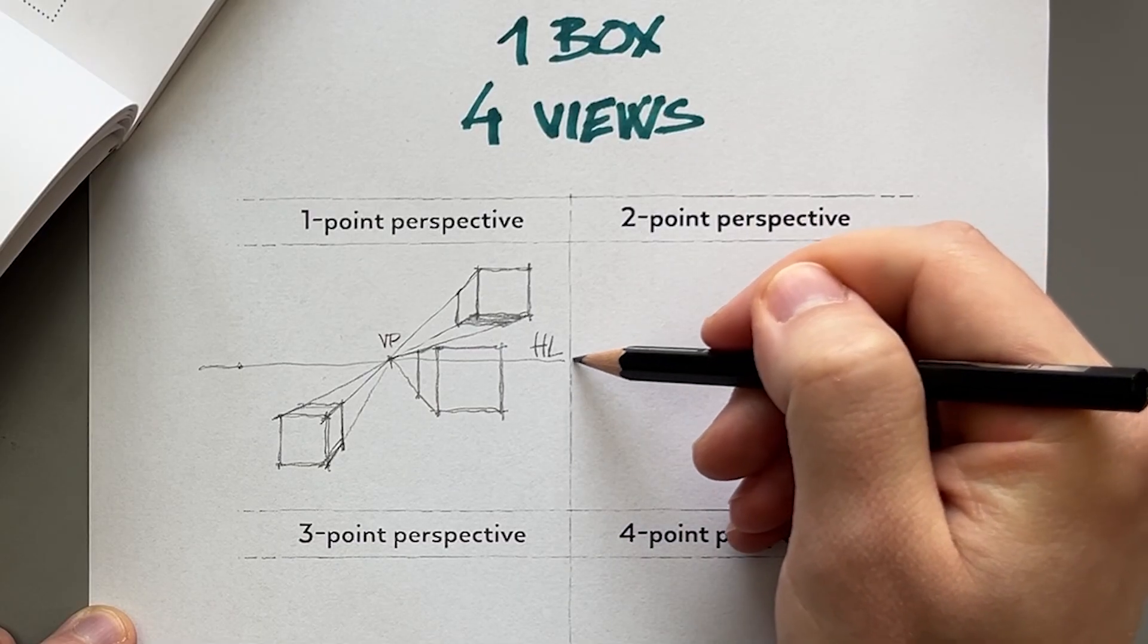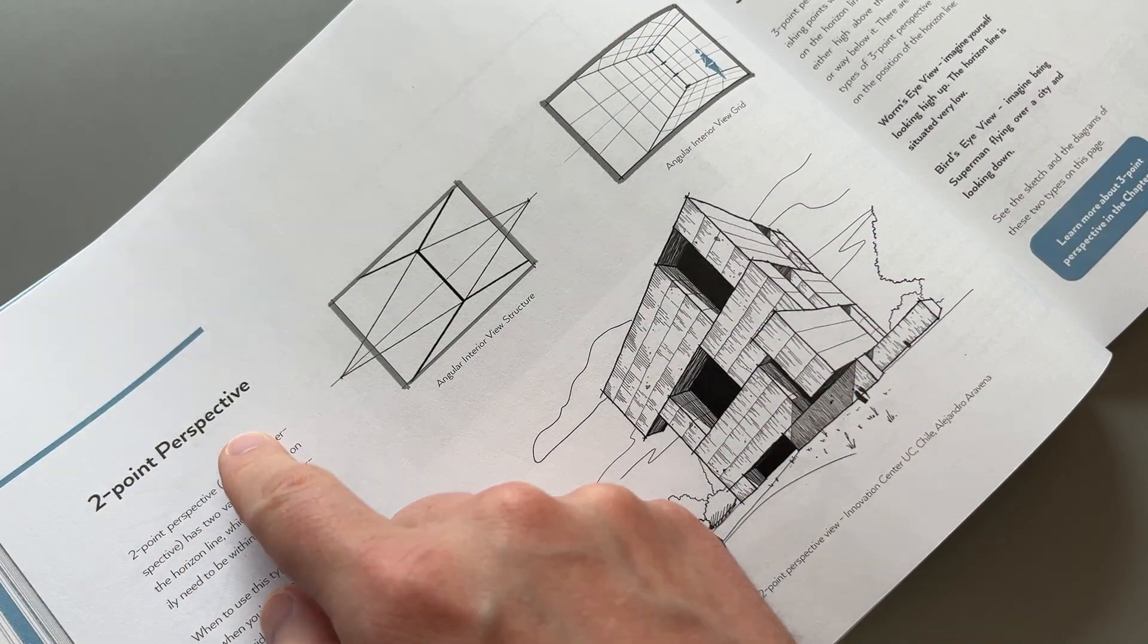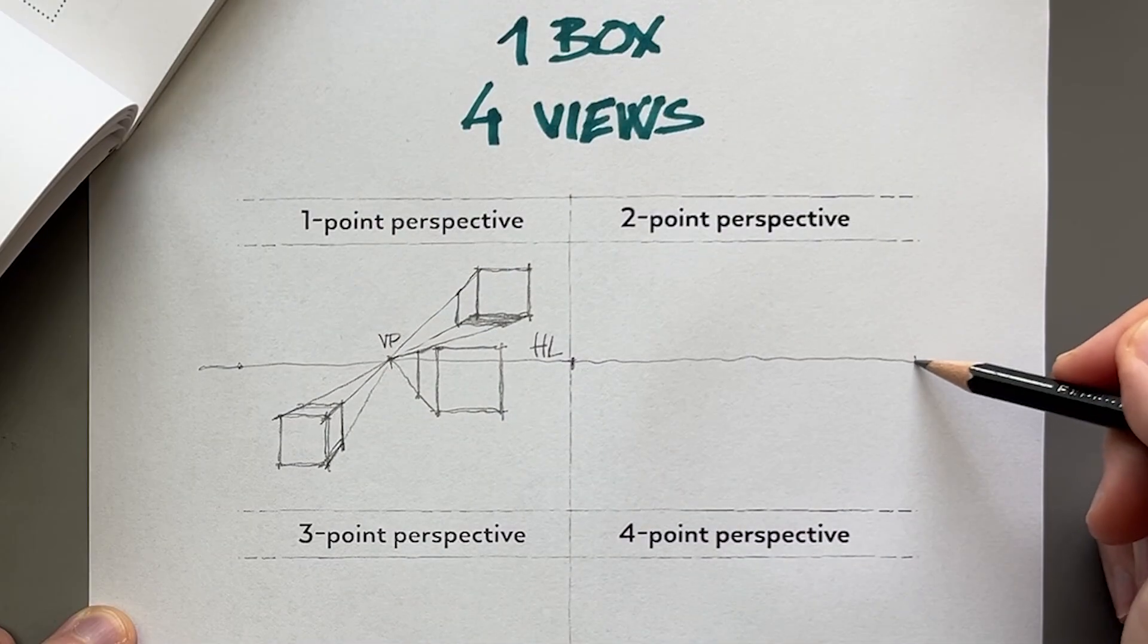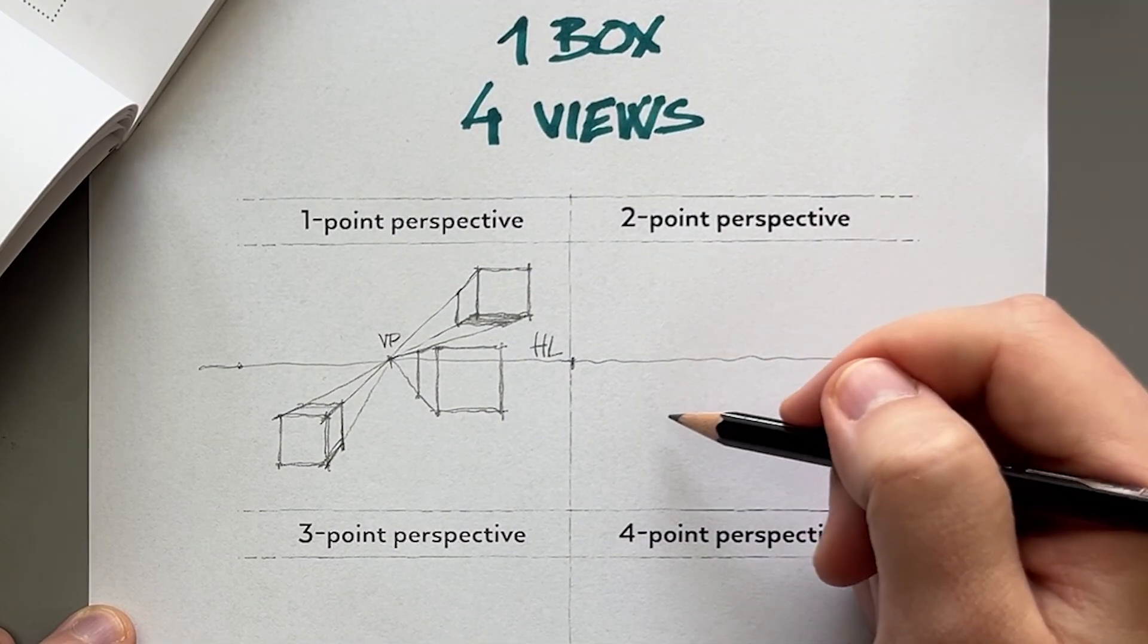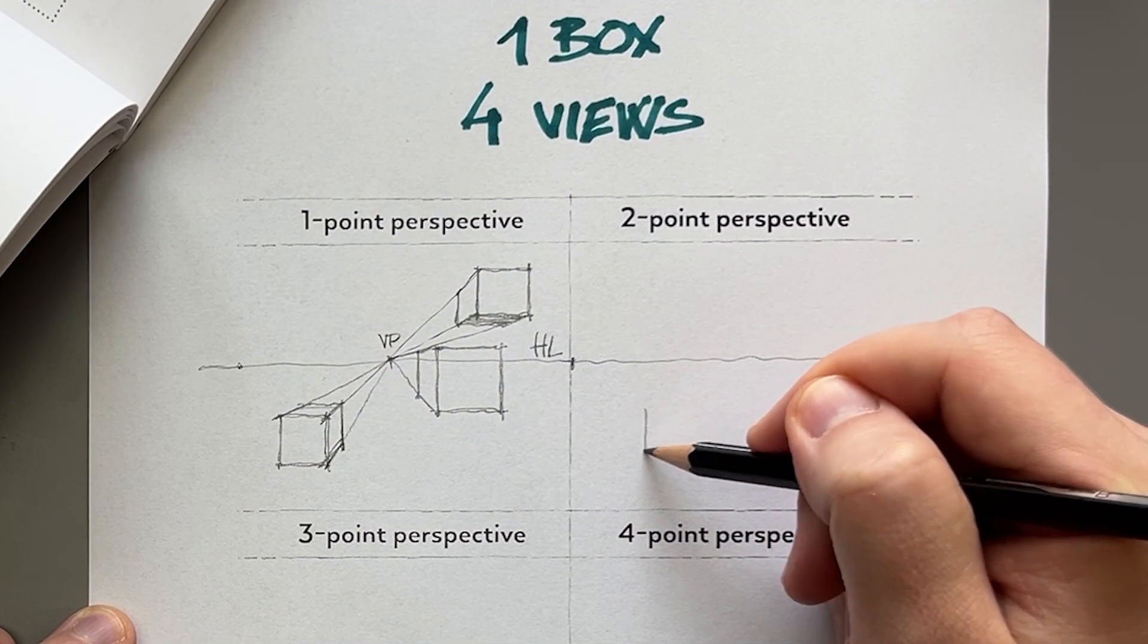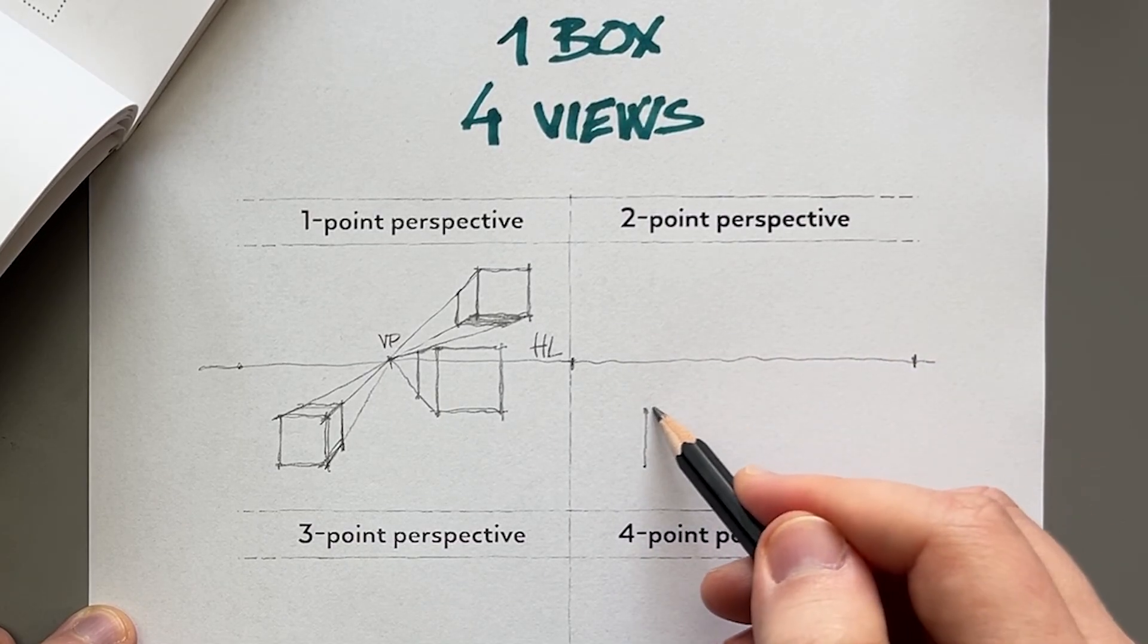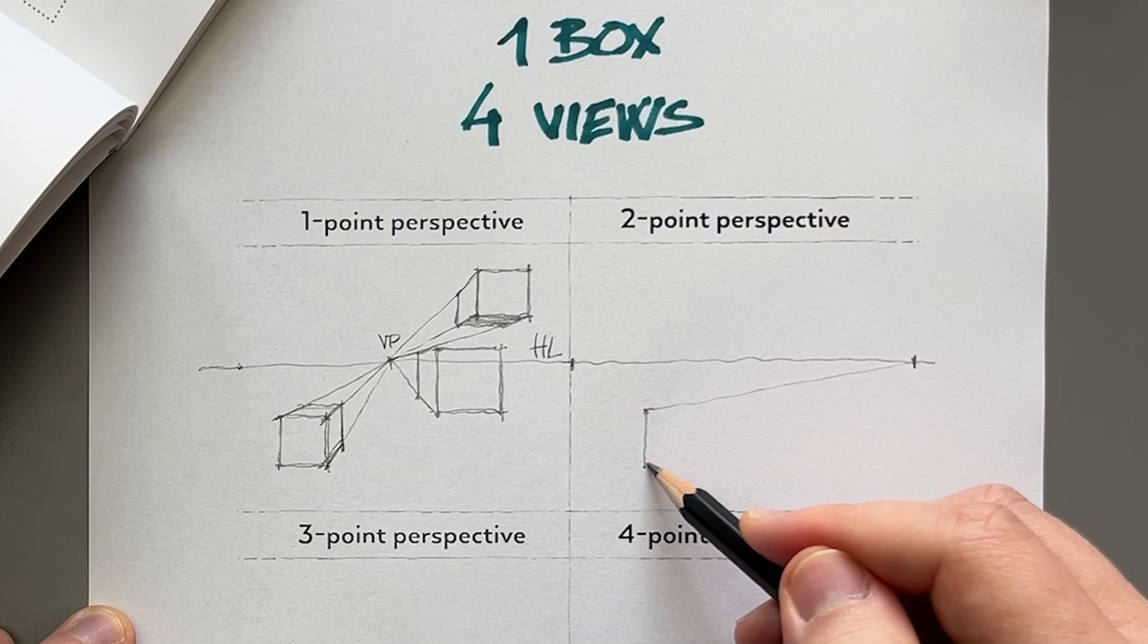Now with two-point perspective it's going to be similar. We'll just have two vanishing points and I'll draw them to the very edge. Again, I can draw it either under the horizon line, just the front edge, and connect it to the vanishing points.